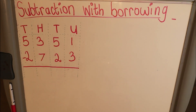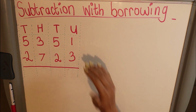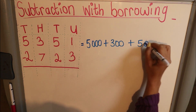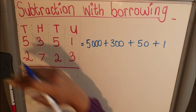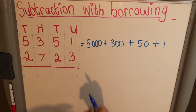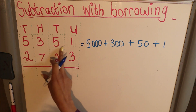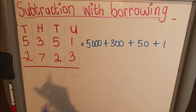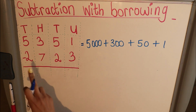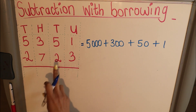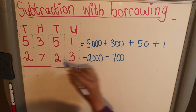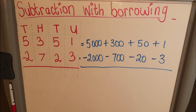In the following example I have subtraction with borrowing. What do I do before I start? I expand each number. The rule for subtraction is top minus bottom. This question is five thousand three hundred and fifty-one minus two thousand seven hundred and twenty-three. This means I'm subtracting two thousand, subtracting seven hundred, subtracting twenty, and subtracting three.